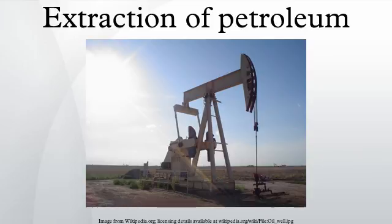Drilling: The oil well is created by drilling a long hole into the earth with an oil rig. A steel pipe is placed in the hole to provide structural integrity to the newly drilled well bore. Holes are then made in the base of the well to enable oil to pass into the bore. Finally, a collection of valves called a Christmas tree is fitted to the top; the valves regulate pressures and control flow.